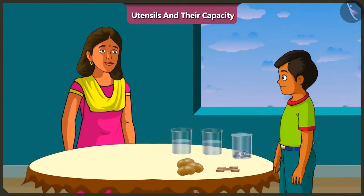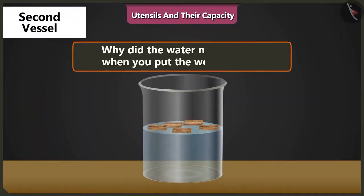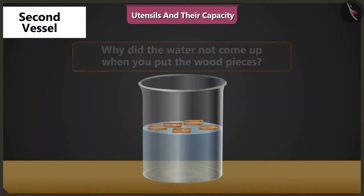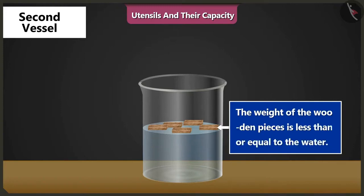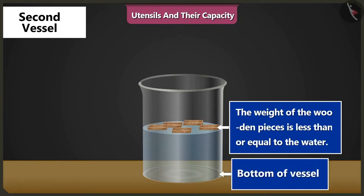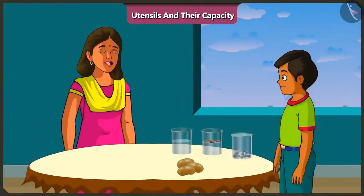Well said, Mishtu. Now put these pieces of wood in another vessel half filled with water. Why did the water not come up when we dropped in the wooden pieces? Because the weight of these pieces of wood is less than or equal to the weight of water in the vessel. So, these pieces did not sink to the bottom of the vessel. This is why the water did not come up.